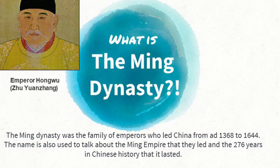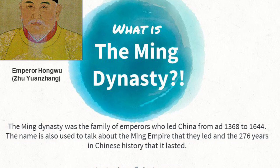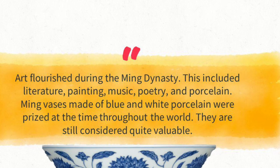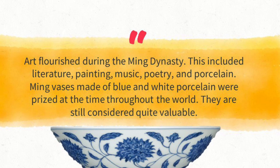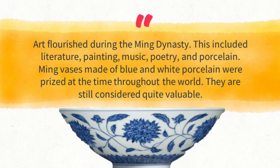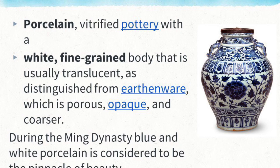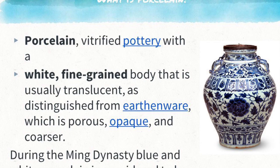The Ming dynasty was the family of emperors who led China from 1368 to 1644. Why do we want to learn about the Ming dynasty? Well, because art flourished during this time period. This included literature, painting, music, poetry, and porcelain. Ming vases were made of blue and white porcelain, which is a vitrified pottery that was very fine-grained and translucent.